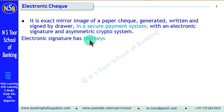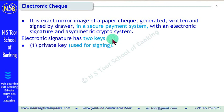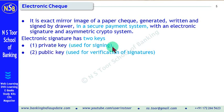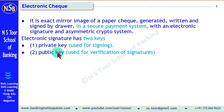An electronic check has two keys. One is called the private key, which is used for signing purposes. The other is the public key, which is used for verification of the signatures. The private key is kept secret, whereas the public key is disclosed. This is an electronic check.